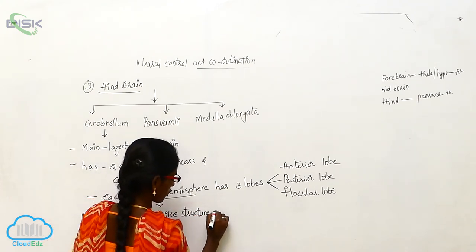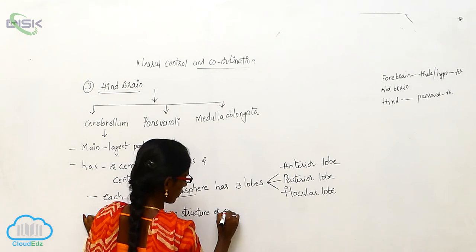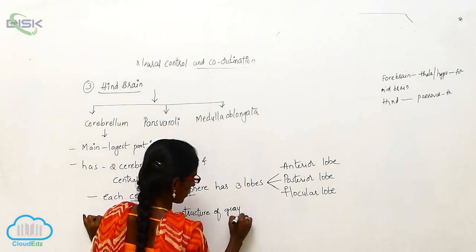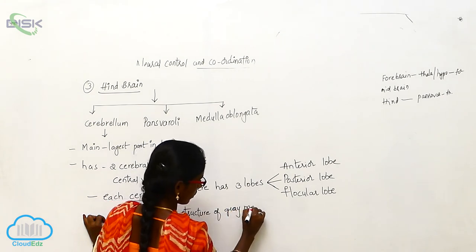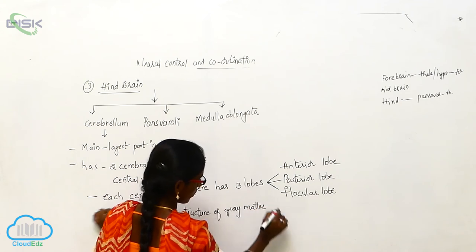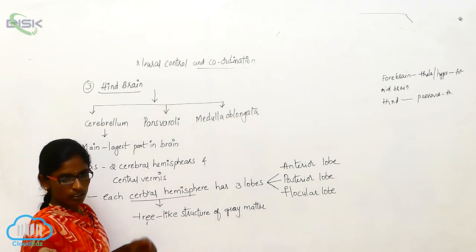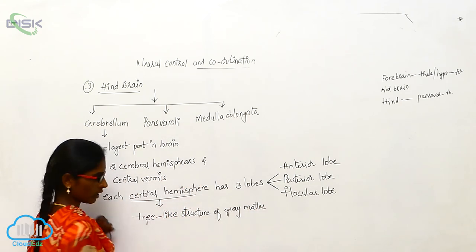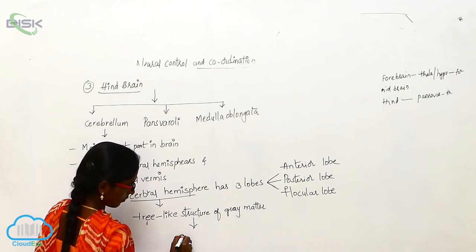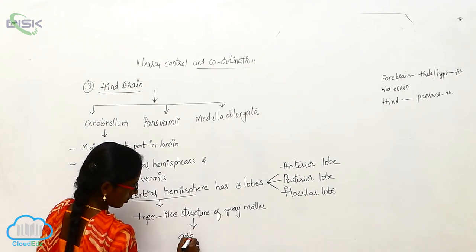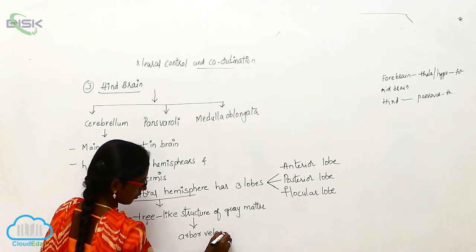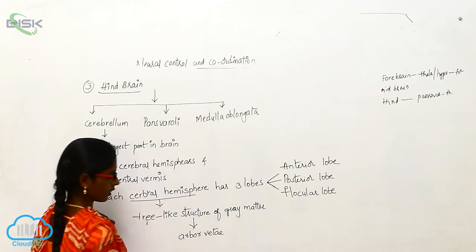The Cerebellum has anterior lobe, posterior lobe, and floccular lobe. The grey matter of the Cerebellum is called the Cerebellum cortex, and its tree-like structure is called Arbor vitae.